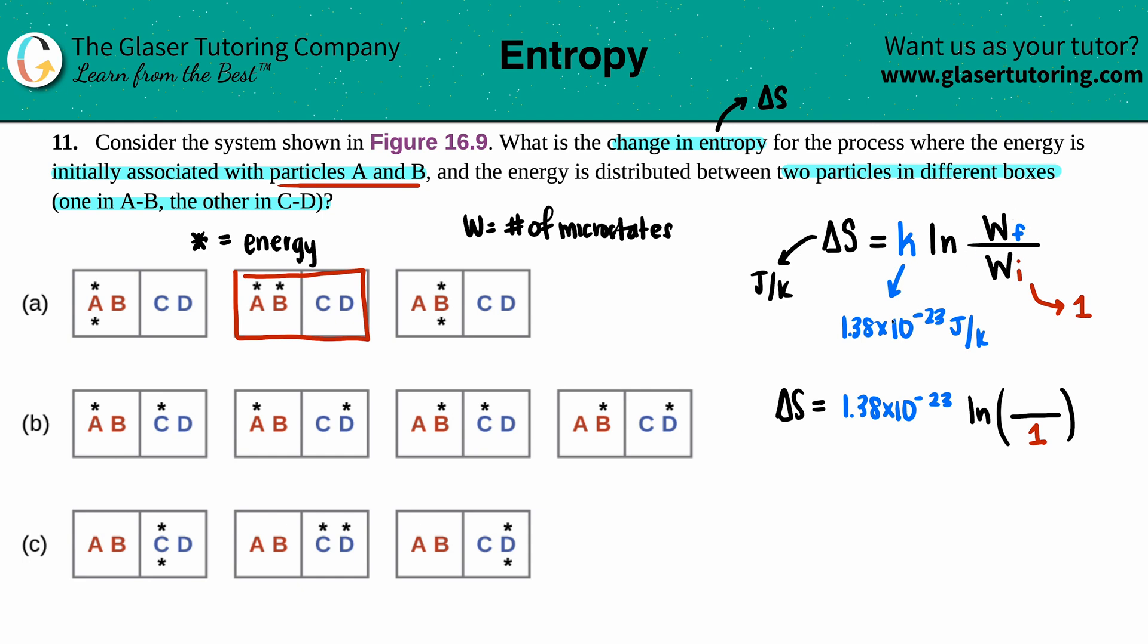They said that the energy is distributed between two particles in different boxes. One has to be either A or B, and the other one has to be either C or D.